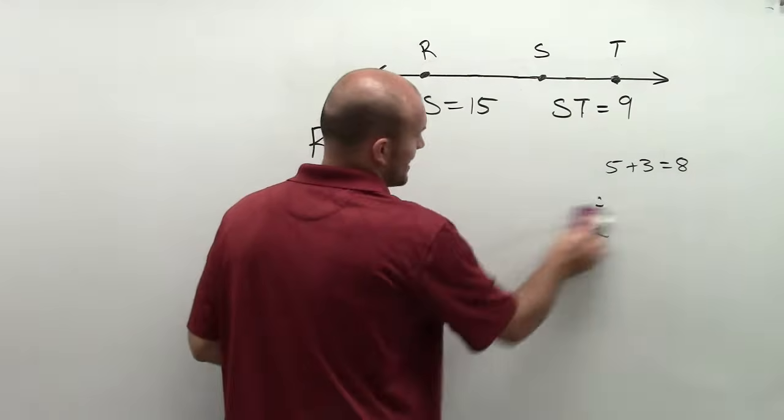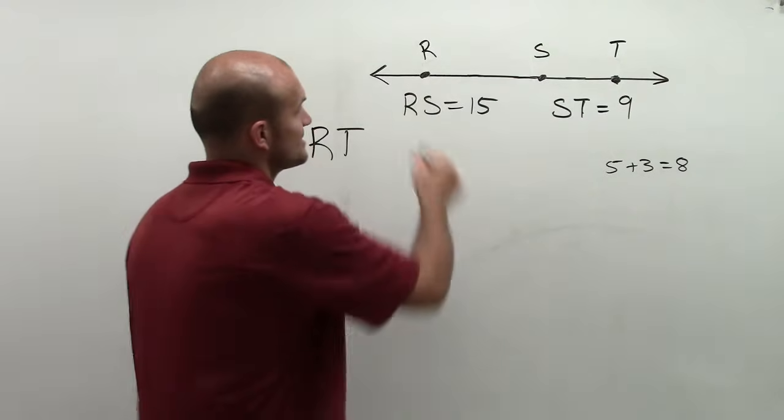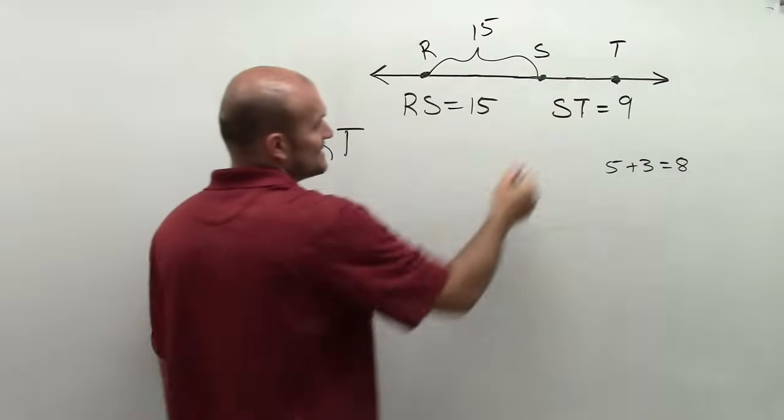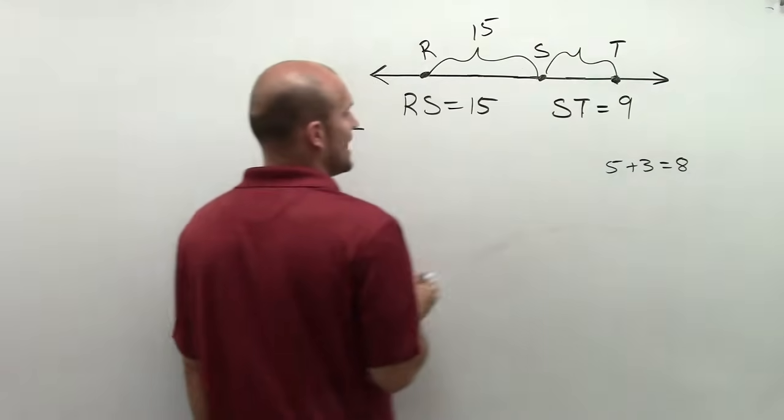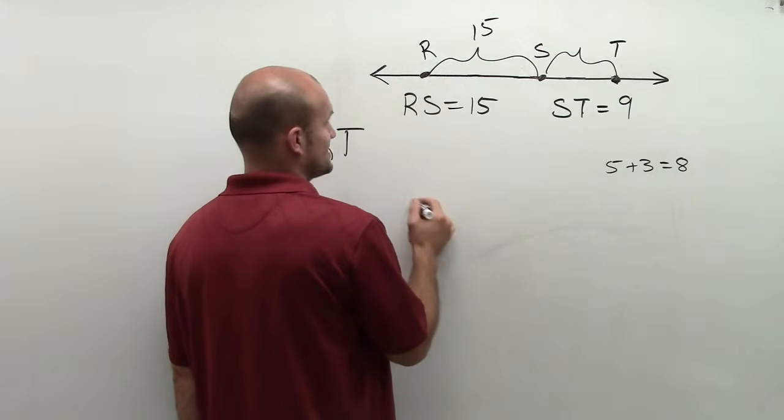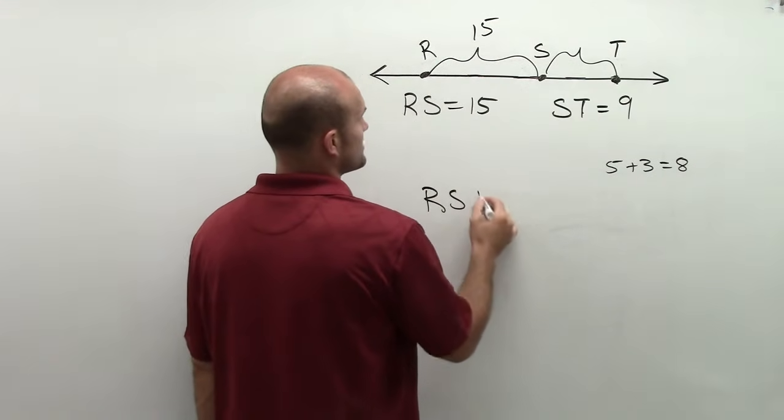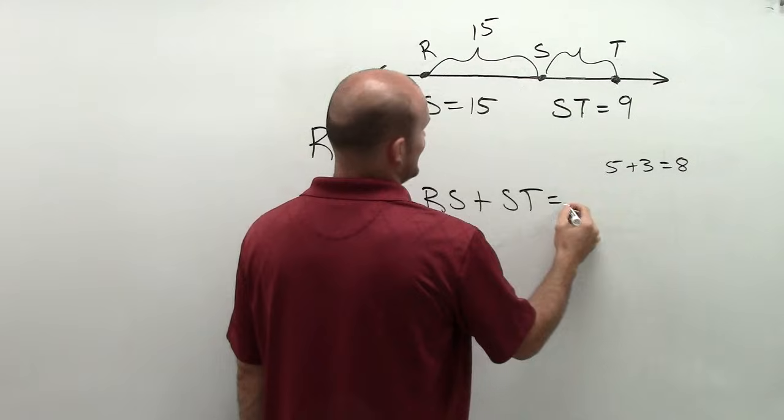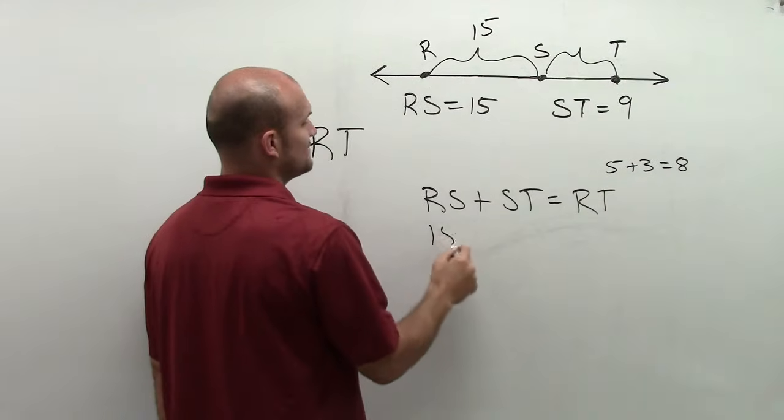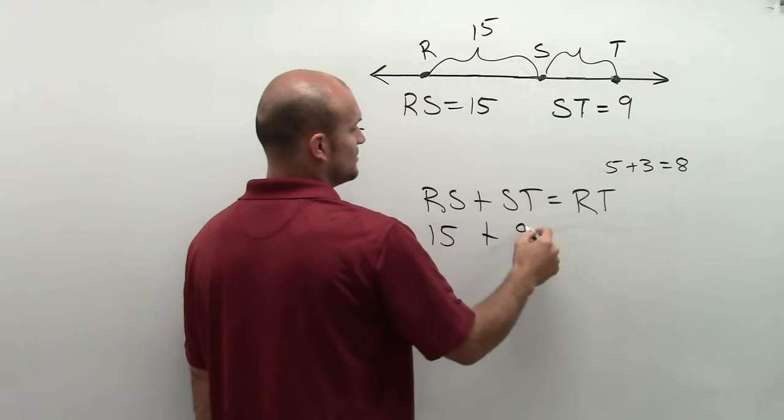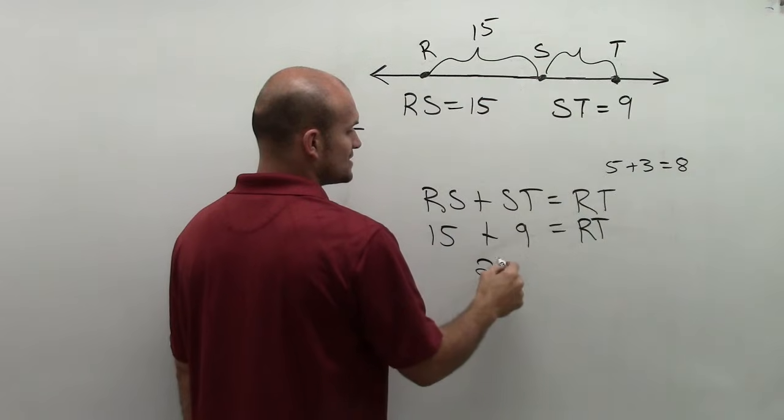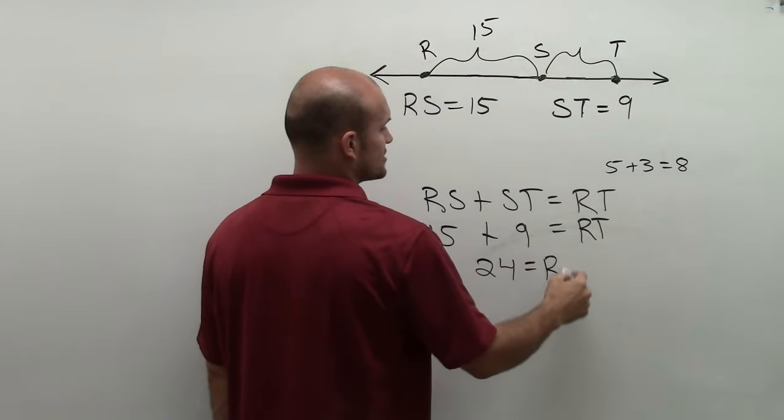So in this case, I have a picture and it says RS is equal to 15, and then I have ST is equal to 9. So by using the segment addition postulate, I could say that RS plus ST equals RT. So RS, again, is 15 plus ST, which is 9, equals RT, which therefore is 24 equals RT.